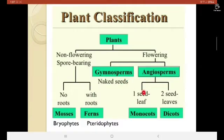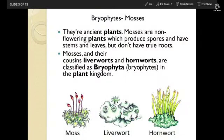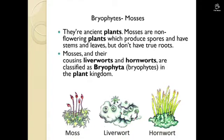Angiosperms have two parts called one seed leaf and two seed leaf. One seed leaf are called monocots and two seed leaf are called dicots. As you can see, these are the mosses — these virus-like pods are the mosses.